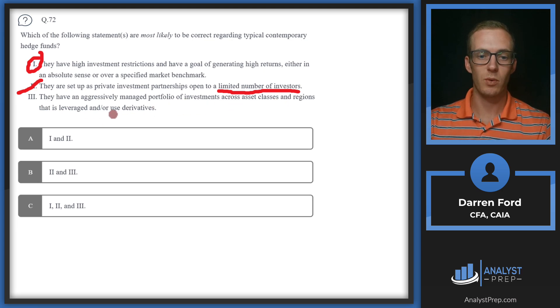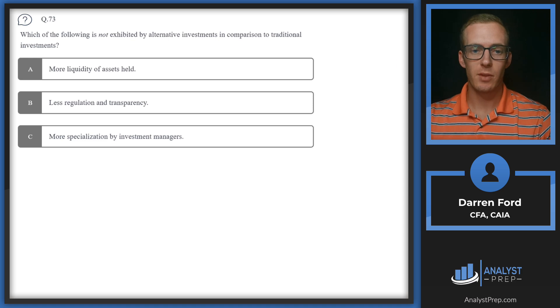Statement three: They have an aggressively managed portfolio of investments across asset classes and regions that is leveraged and/or uses derivatives. This is certainly also a characteristic of typical hedge funds. So we'll go with C: one, two, and three are all correct.